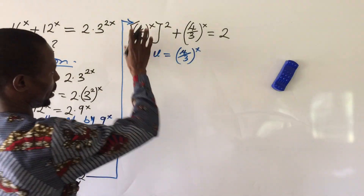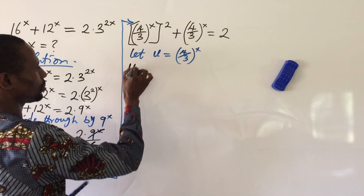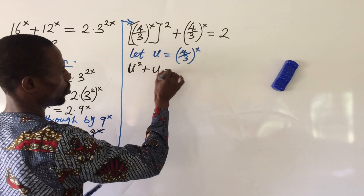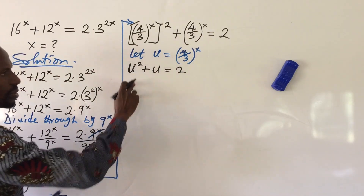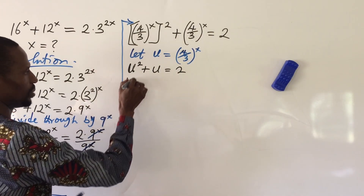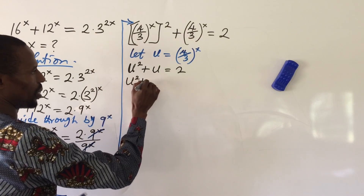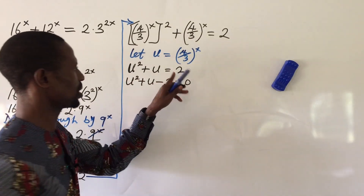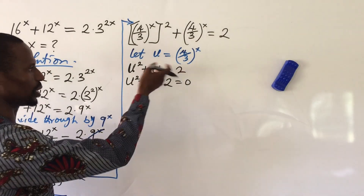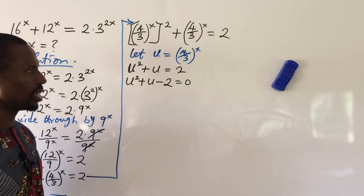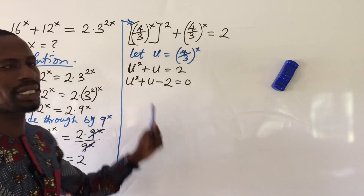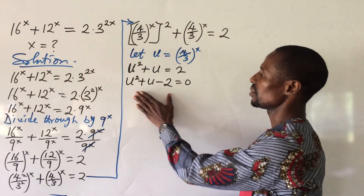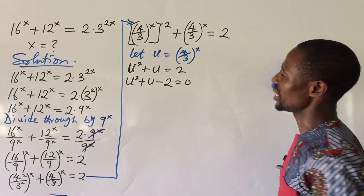This expression now becomes u squared plus u equal to 2. Bringing 2 to the left-hand side gives u squared plus u minus 2 equal to 0, because the plus crosses the equality sign and turns to minus. This is a quadratic equation, and we can solve it using the factorization method.